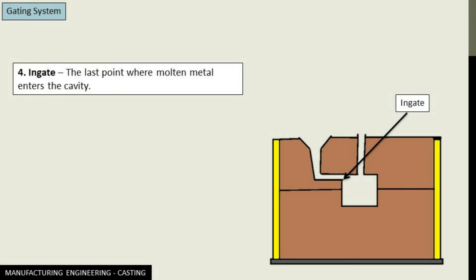Then we have the ingate. It's the last point where molten metal enters the cavity. So you can consider the ingate as the last point in the gating system.